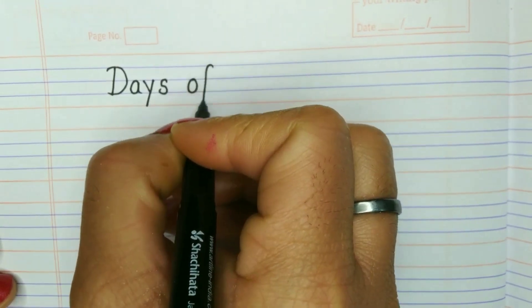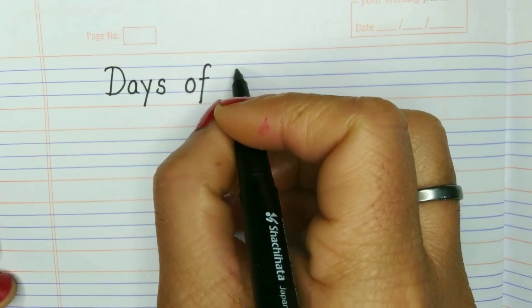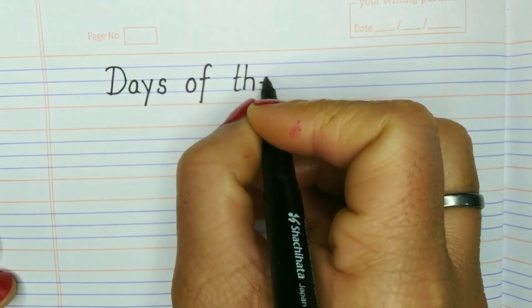There are 7 days in a week. So, first of all, we will write the heading, the title: days of the week.